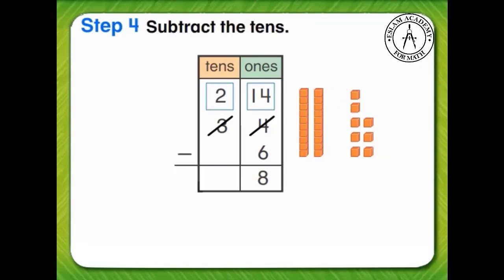Finally, subtract the 10s. 2 10s minus 0 10s equals 2 10s. So, 34 minus 6 equals 28.